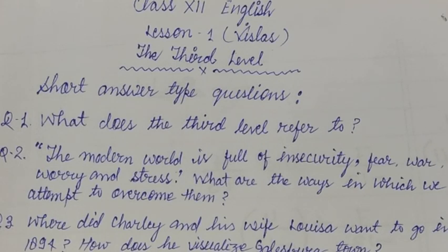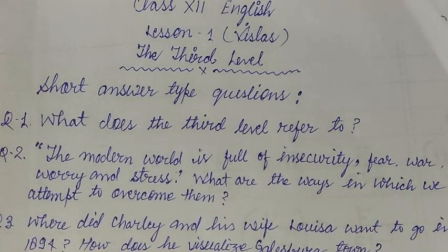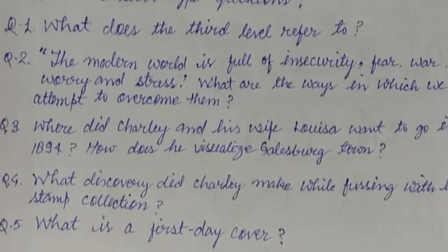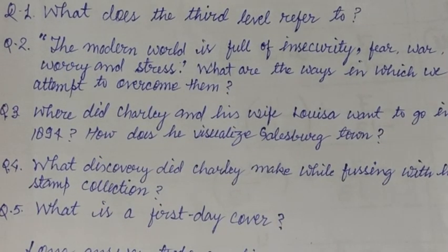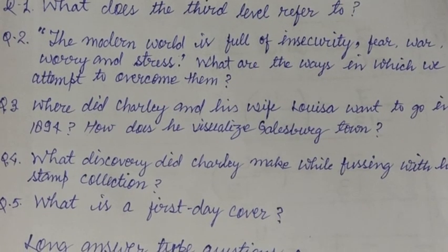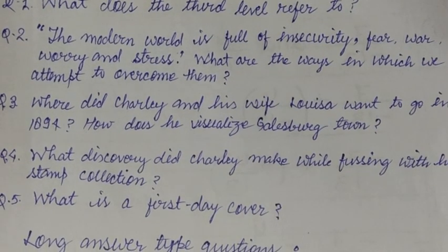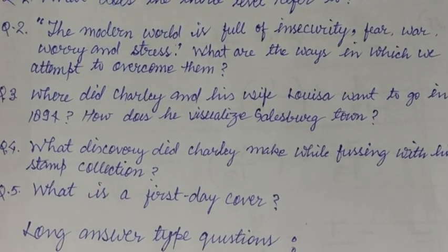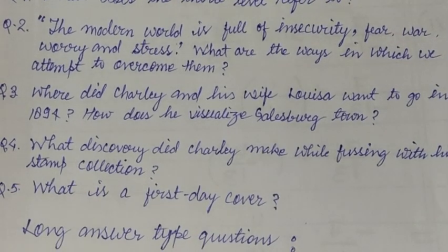Question number four: What discovery did Charlie make while looking through his stamp collection? The answer is, one night he found an old stamp on the envelope. It was called the first day cover — a new stamp issued in 1894. It had been mailed by someone to Charlie's grandfather who lived in Galesburg. It bore the stamp dated July 18, 1894, and bore the picture of President Garfield.